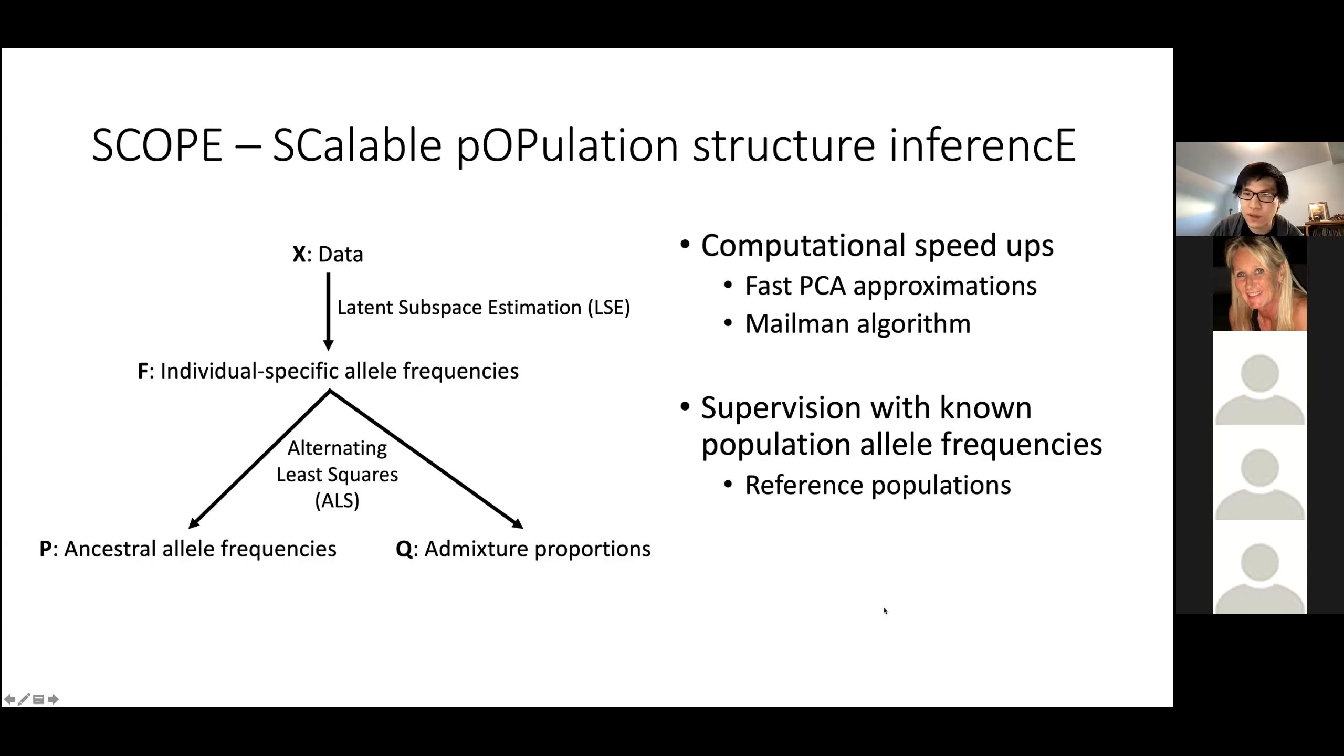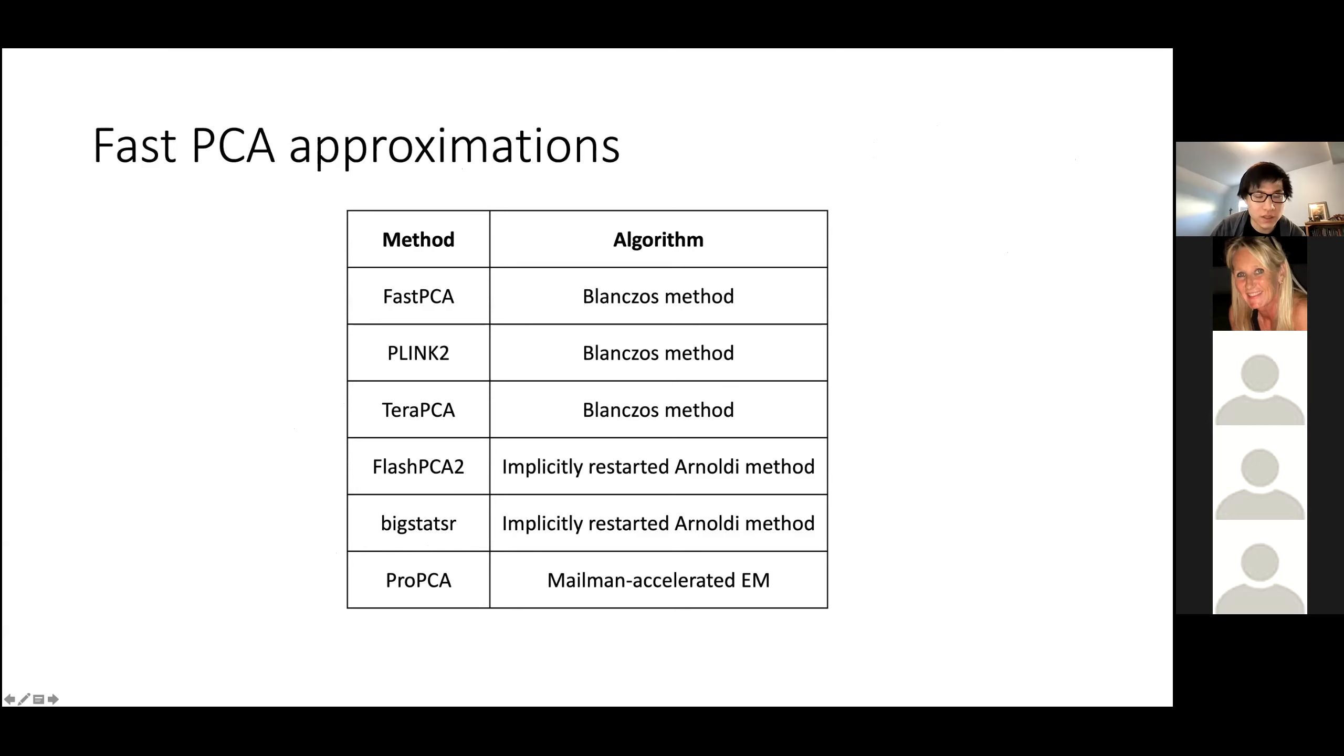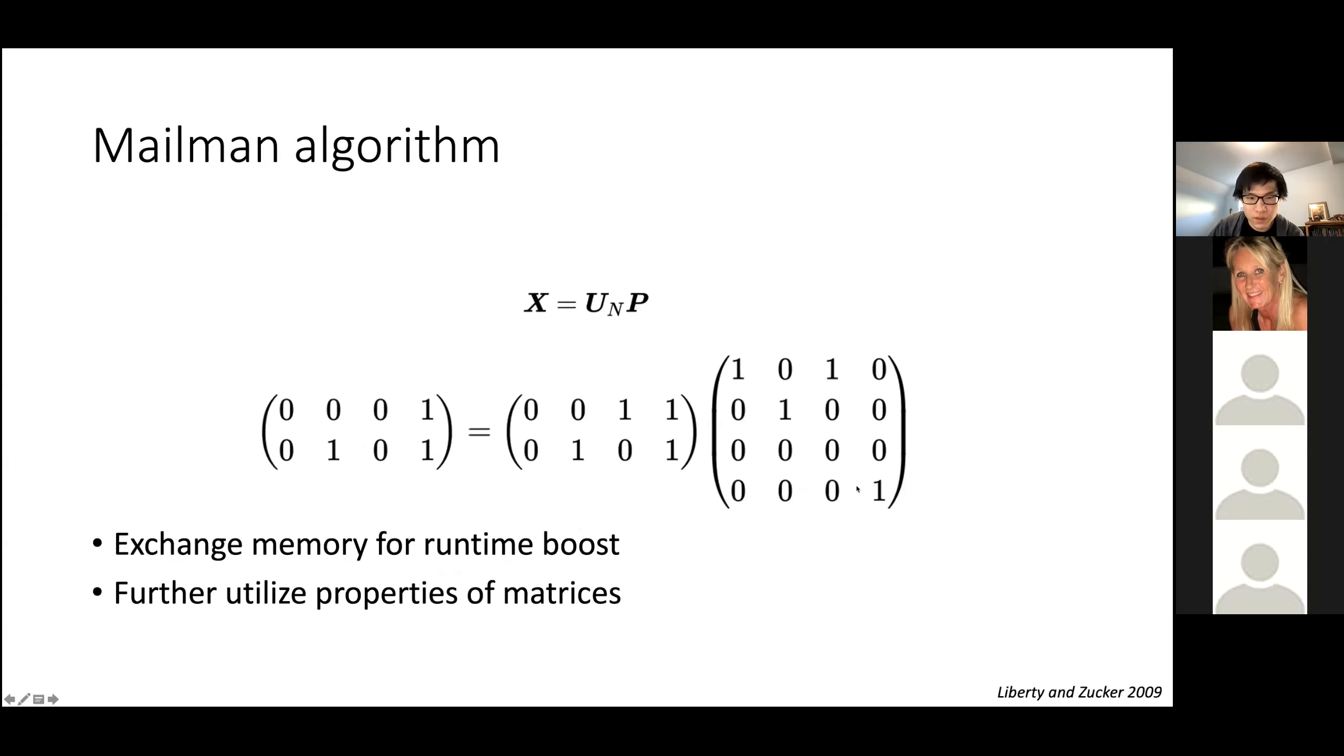The first speedup is fast PCA approximations. These are fairly well known from the literature and have been widely used in genetics for a while. There are many methods including our own ProPCA that have implemented scalable PCA approximations. They largely belong to one of two methods. We took one of these methods and integrated it into our algorithm, specifically using the same strategy as FlashPCA.